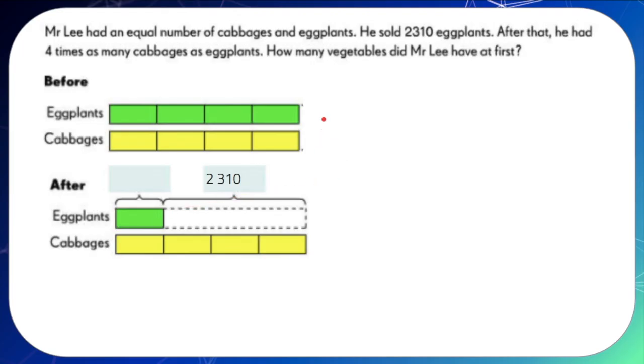Now, let's try to complete our model. How many vegetables did Mr. Lee have at first? We can write that by drawing a bracket and a question mark. Let's start solving the problem. Examine the model that we have just constructed. By looking at this model, we can find clues from this part.